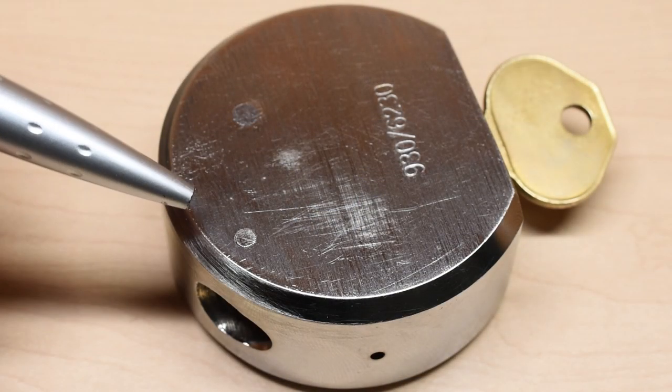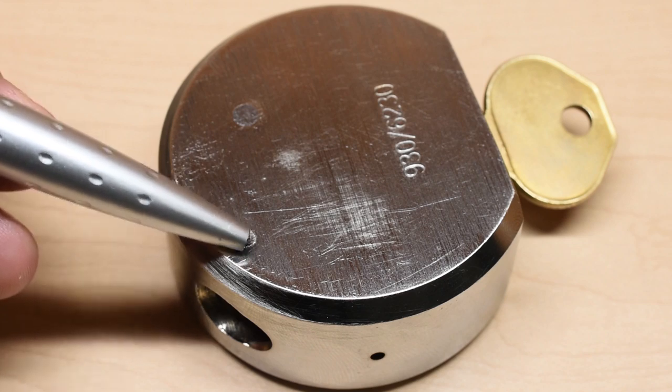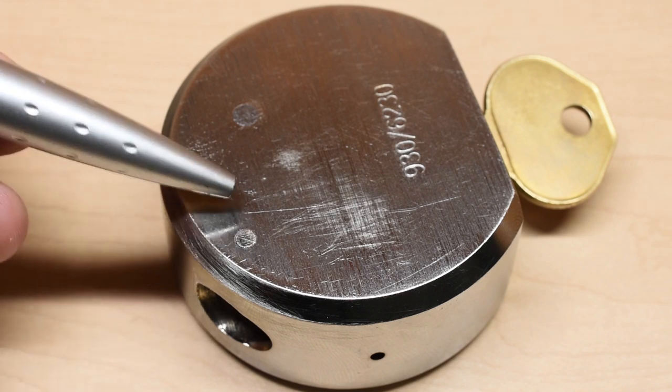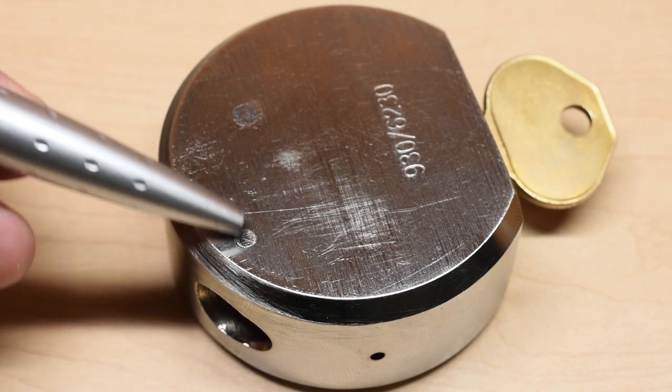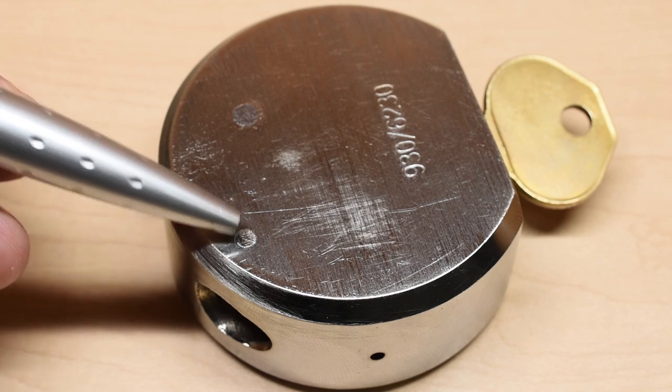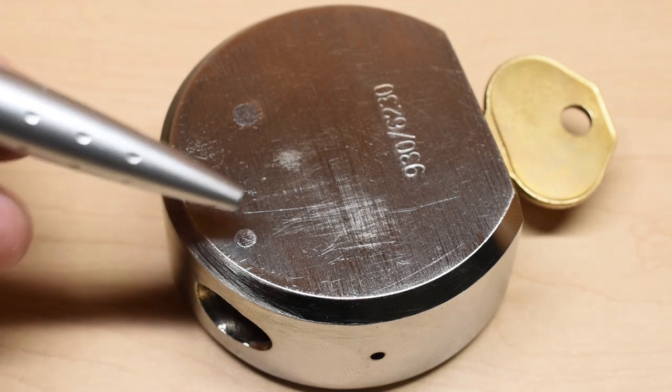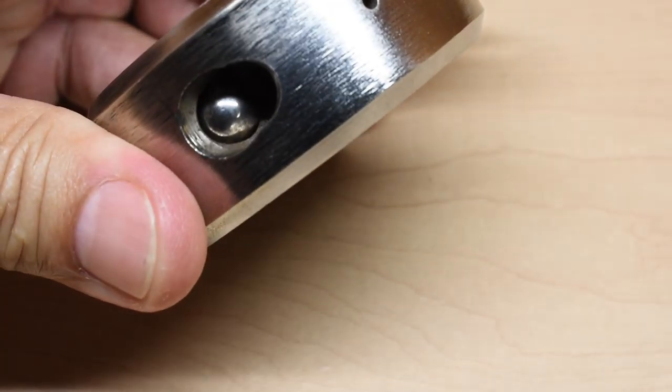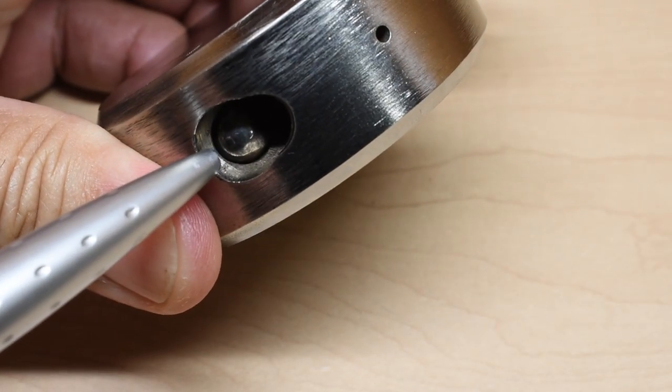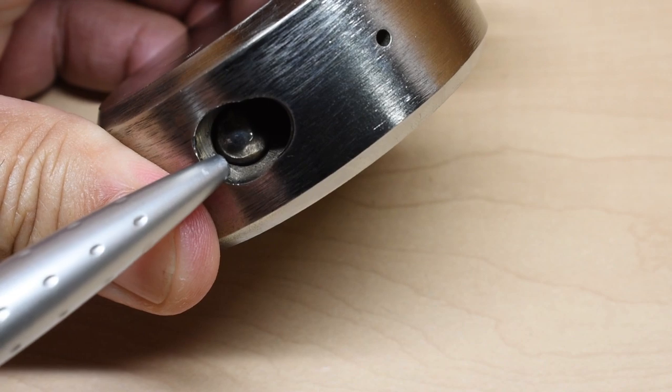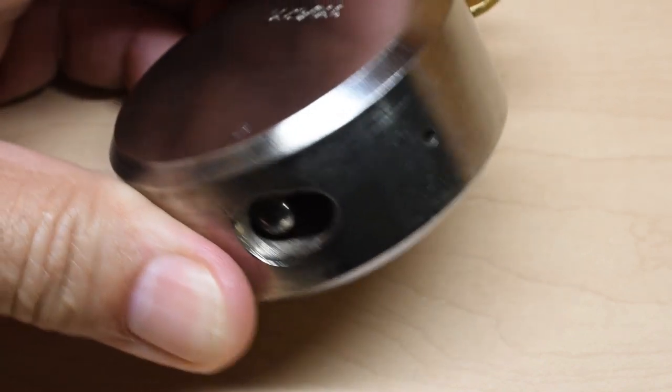Right over here you can see there's a pin that was inserted into the body of the lock and then everything was ground down nice and smooth. The purpose of that pin when they inserted it at the factory was to keep this ball right over here from falling out completely. It sticks out just enough to keep the ball from falling out.